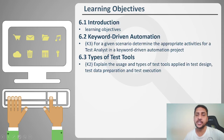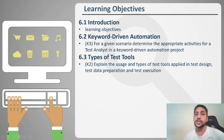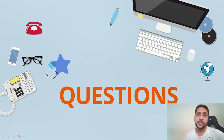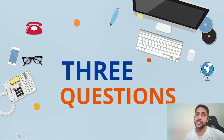Along with these keywords we have certain learning objectives. The first one is Introduction, then we will see Keyword Driven Automation, and at the end we will see Types of Test Tools. These are the 3 objectives which we will cover under this chapter. From this chapter you are going to get 3 questions. So let's start with the lecture now.